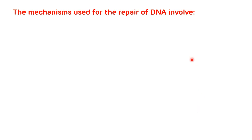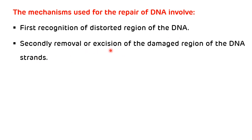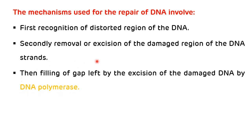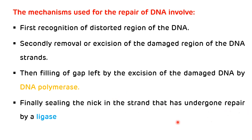The mechanism used for the repair of DNA involves four main steps. First is the identification or recognition of the distorted region of the DNA. Second is the removal or excision of the damaged region of the DNA strand. Third is the filling of the gap left by the excision of damaged DNA by DNA polymerase enzyme. The final step is sealing the nick in the strand that has undergone repair by ligase enzyme.